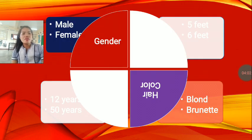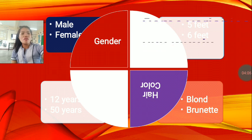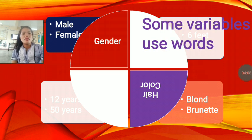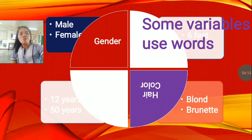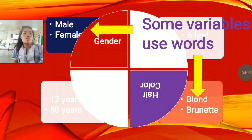On the other hand, for the gender and hair color, these variables are using words. You have there some variables use words: male, female, blonde, and brunette.